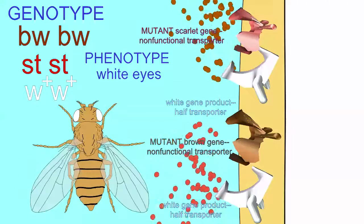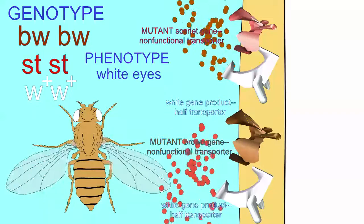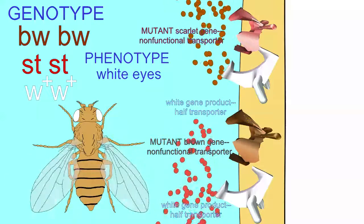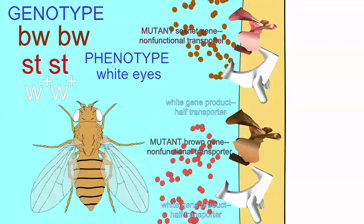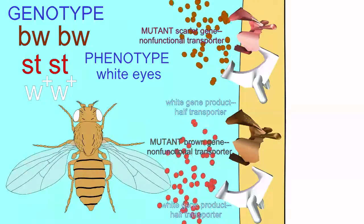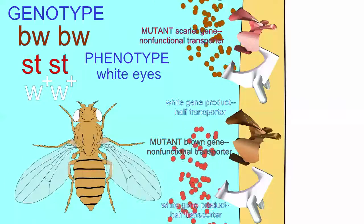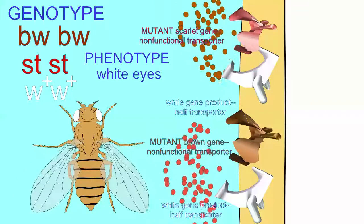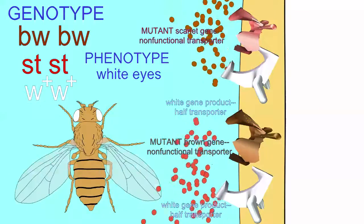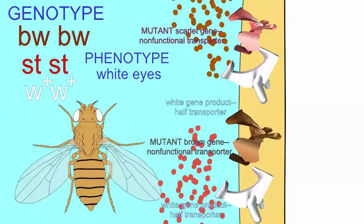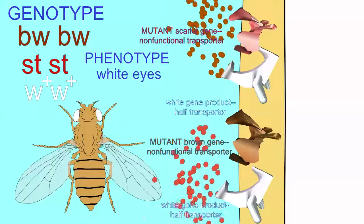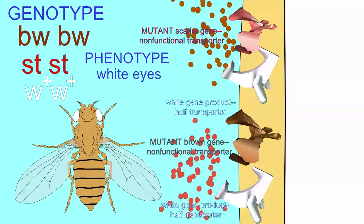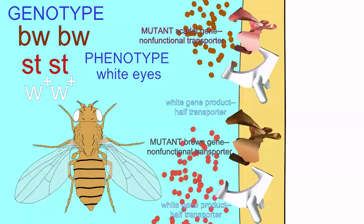And because I am homozygous recessive for a mutation in the scarlet gene, I cannot pump brown pigment. And since I cannot pump scarlet or brown pigment, I have white eyes, even though my white gene is normal.